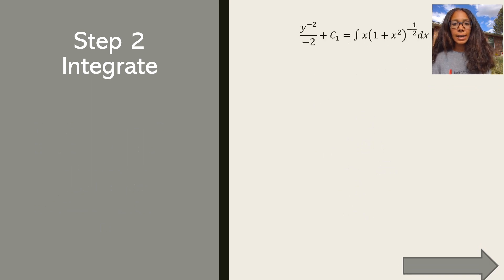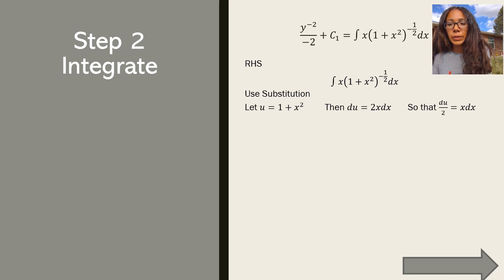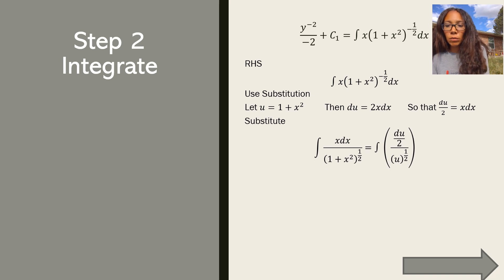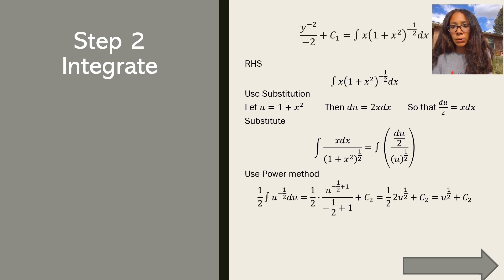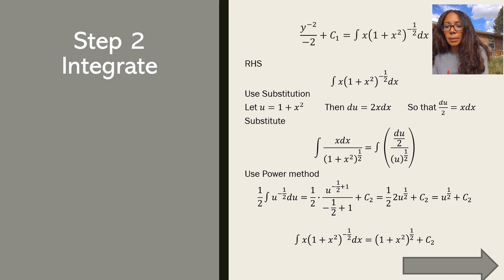For the right-hand side, we have the integral of x times the quantity 1 plus x squared to the negative one-half dx, and we use substitution. Let u equal 1 plus x squared, so du equals 2x dx. Substituting back in, we get the integral of du/2 over u to the one-half. Taking out the constant one-half and using the power rule, the 2 and one-half cancel, giving us u to the one-half plus c2. Substituting back, we get the quantity 1 plus x squared to the one-half plus c2.